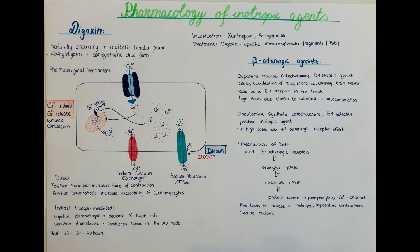Hi, my name is Jesper. Thank you for watching. In this video I will be talking about the pharmacology of the most important inotropic agents. First of all, an inotropic agent is a drug or medication that positively influences the contraction of the myocardial cells. This can, for example, be useful in heart failure where the heart does not sufficiently contract.